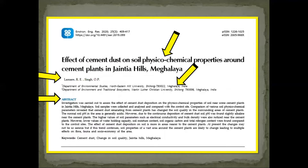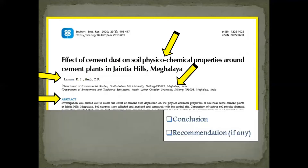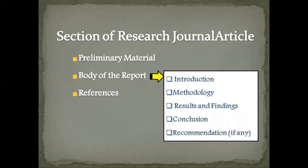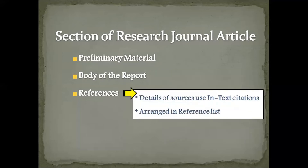The preliminary material also includes the abstract. For example, in this research journal article on screen, these elements constitute the preliminary material. The body of the research journal article is the main portion, and it includes information such as introduction, methodology, results and discussion where data are analyzed and interpreted, and conclusion and recommendations.